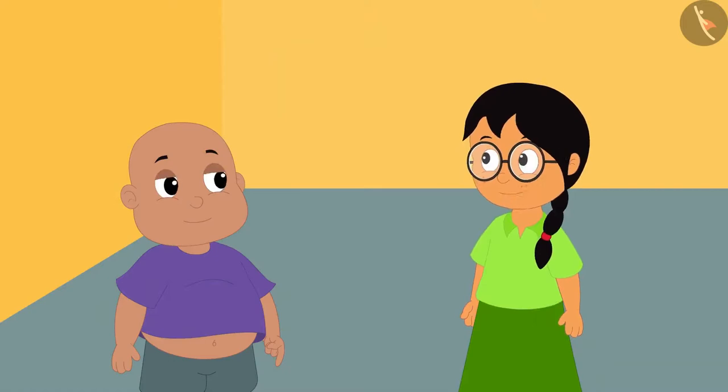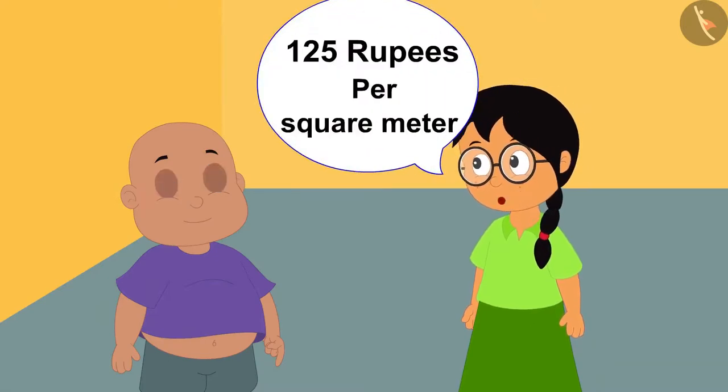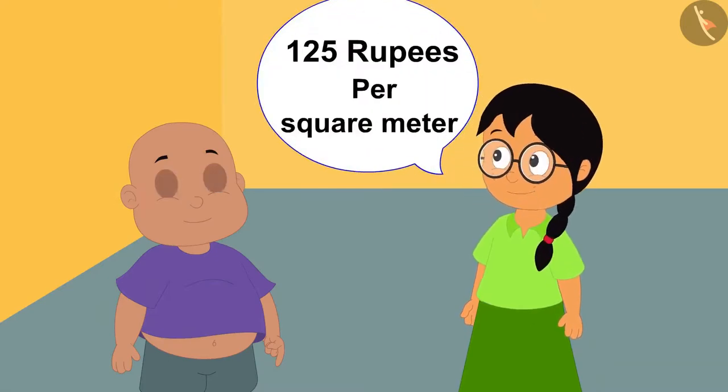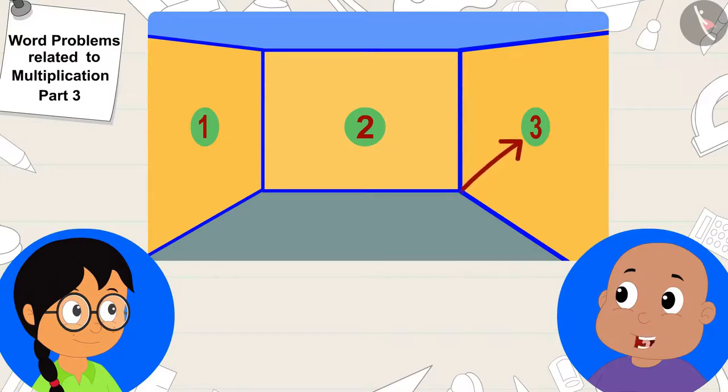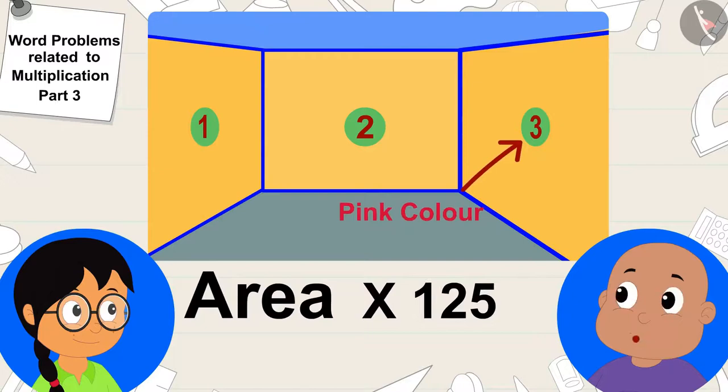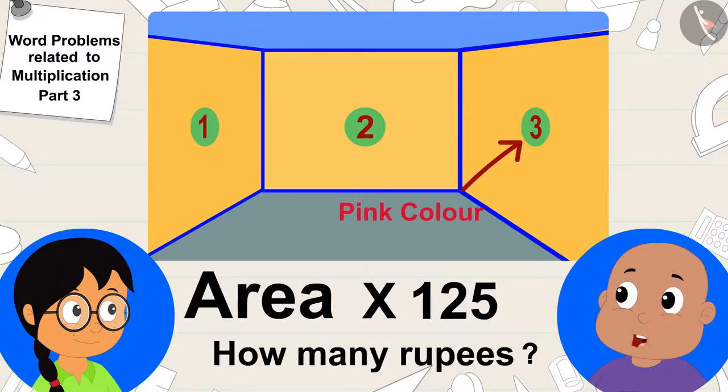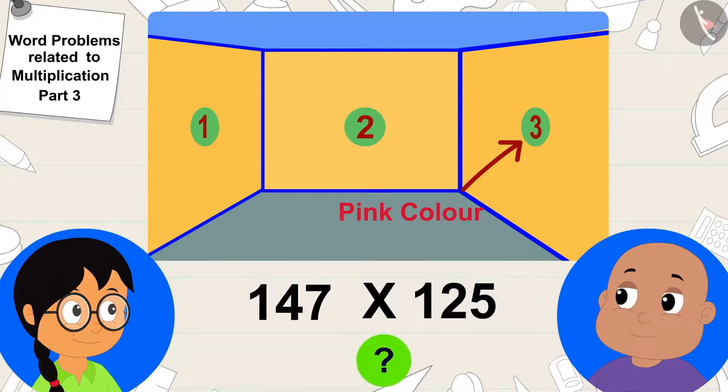Bablu, my father said that it takes 125 rupees per square meter to paint the wall. Meenu told Bablu. It means we have to multiply its area by 125 to find out how many rupees it would take to paint this wall pink. What will be 147 times 125? Bablu asked Meenu.